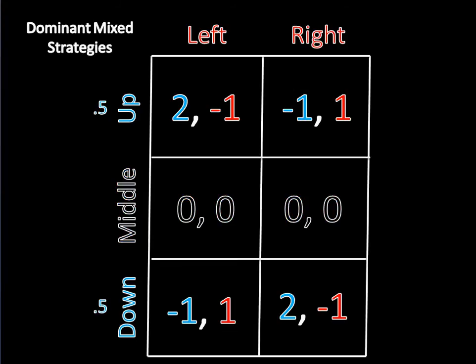That being said, consider the mixed strategy 0.5 up, 0.5 down. Note that if player 2 moves left, player 1 earns 2 50% of the time, and negative 1 the other 50% of the time, which comes out to 0.5 if you add those two together. And we'll leave that 0.5 right there just for the time being.